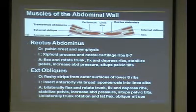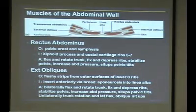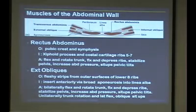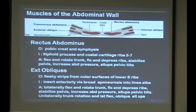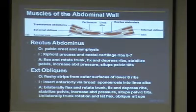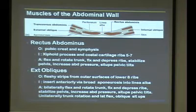The external obliques are going to come from fleshy strips from the lower eight ribs, and then they're going to insert anteriorly into an aponeurosis in the linea alba. So the external oblique comes all the way to the midline — going from the ribs all the way across, jumping around the rectus abdominis. The actions are: it's going to rotate the trunk if one side acts, it's going to flex the abdomen, and it's going to increase pressure in the abdomen.